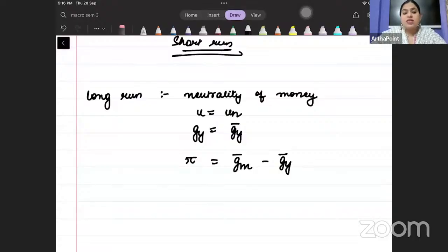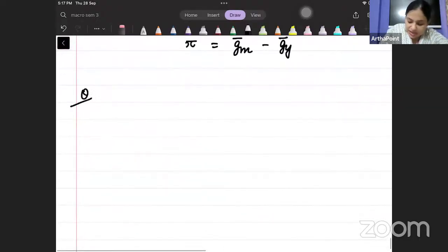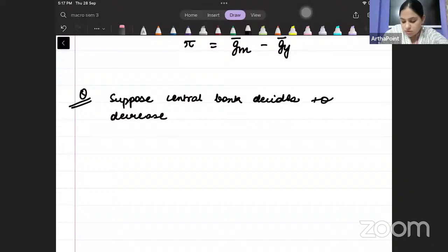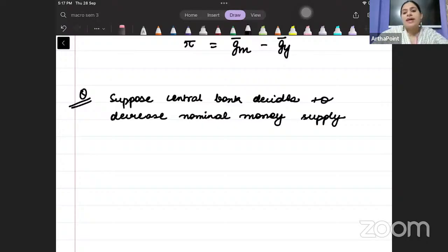But now we want to ask ourselves what happens in the short run. Short run is not necessarily that output will be growing at the natural rate or that unemployment rate will be at the natural rate. So the question that now is asked and can come in exam is: suppose central bank decides to decrease nominal money supply, what will be the impact in short run?